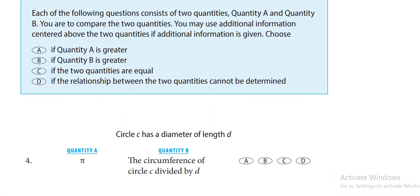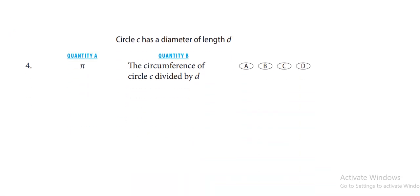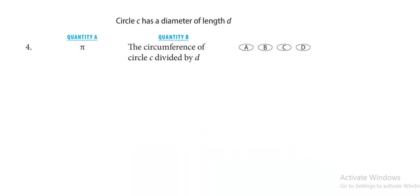This statement will be the same for all questions. Here are the quantity comparisons: A means quantity A is greater, B means quantity B is greater, C means quantities are equal, and D means the relationship cannot be determined. Here, circle C has a diameter of length d.